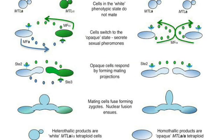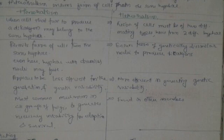Here I would like to differentiate between homothalism and heterothalism. In case of reproduction in microbes or any pathogens, sexual reproduction is a common feature of pathogenic fungi except those belonging to fungi imperfecti.